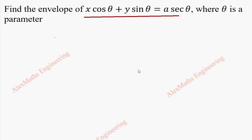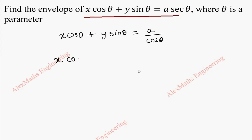We are going to rewrite the given equation x cosθ + y sinθ = a by cosθ. Secant theta is written as 1 by cosθ. When we cross multiply this becomes x·cos²θ + y·sinθ cosθ = a.